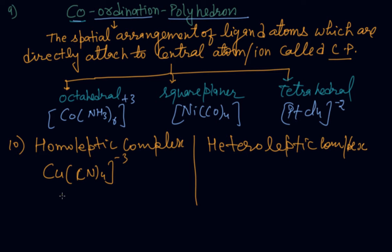And we have taken earlier in the example, first example which we have taken Cu(NH3)4 plus 2. We have earlier taken. So monodentate only one type of ligand, that represents the homo, same.